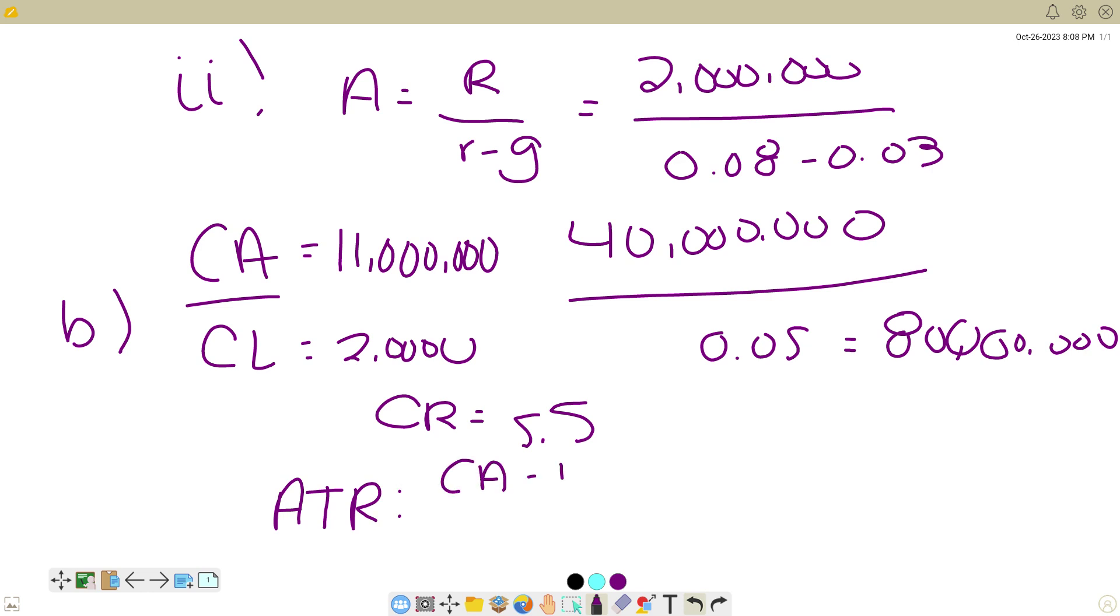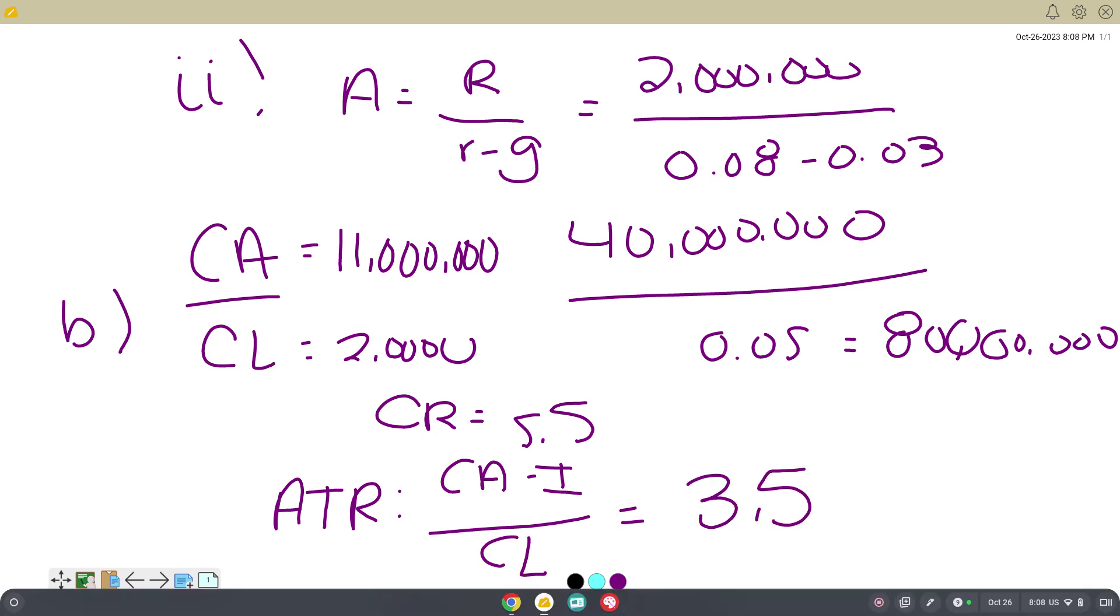we take current assets minus inventory divided by current liabilities, and we get 3.5.